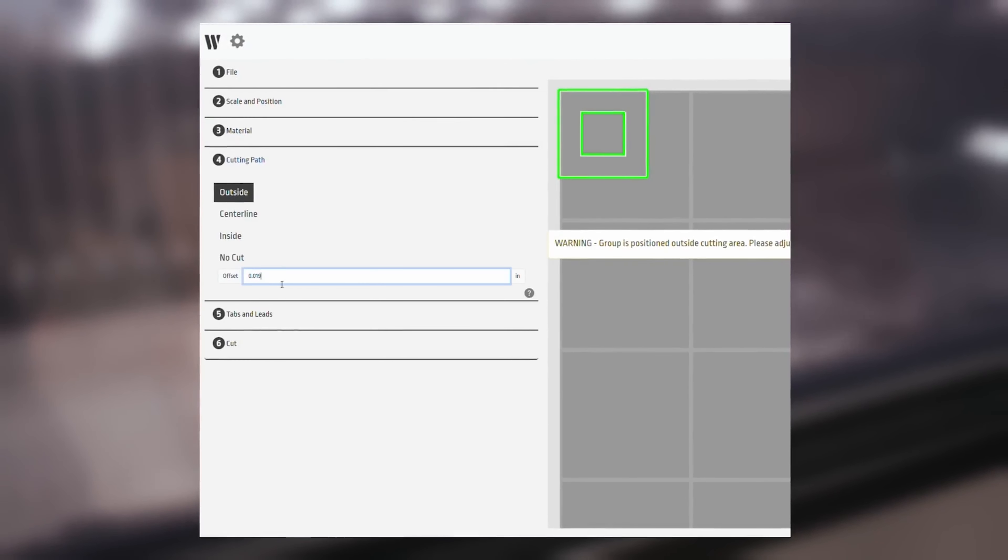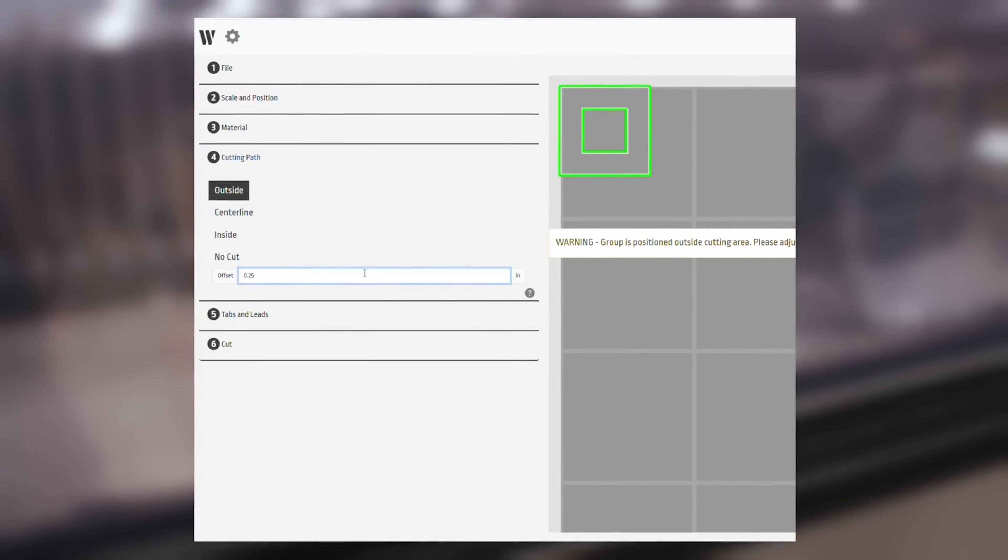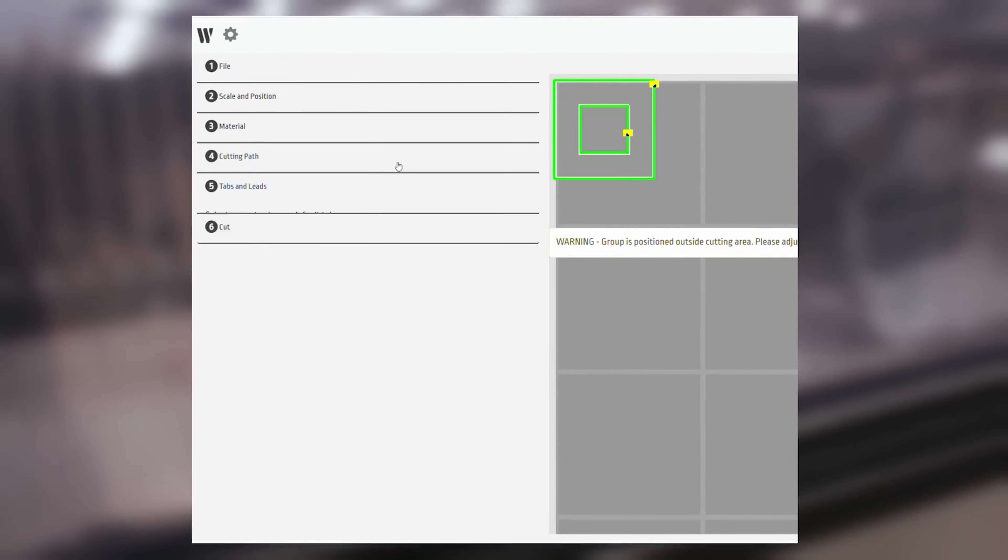And then we can select our cut path. We want center, offset, inside. We have a lot of selection here. Then we can select our tabs and leads or eliminate them all together.